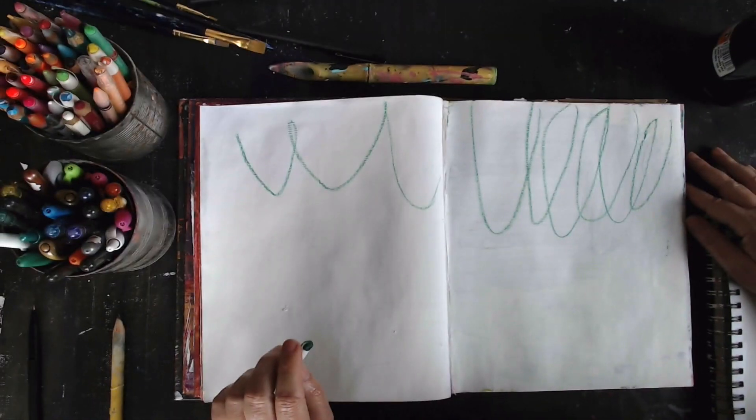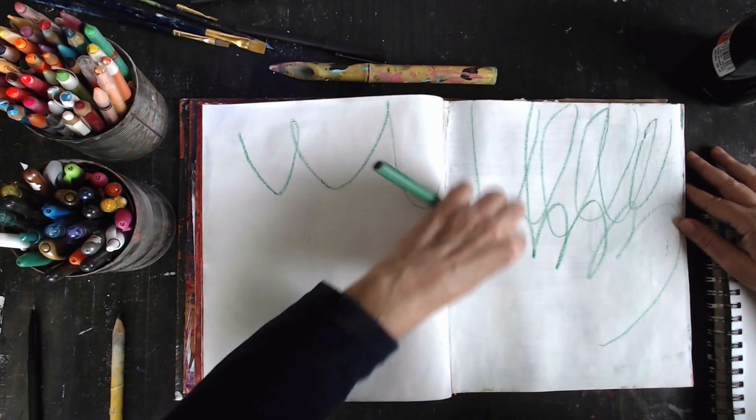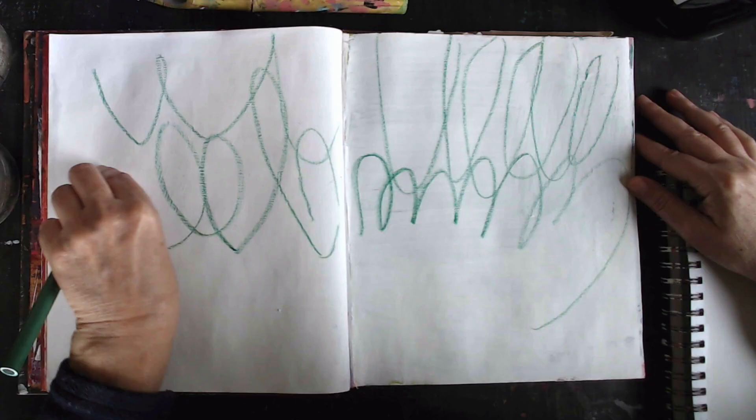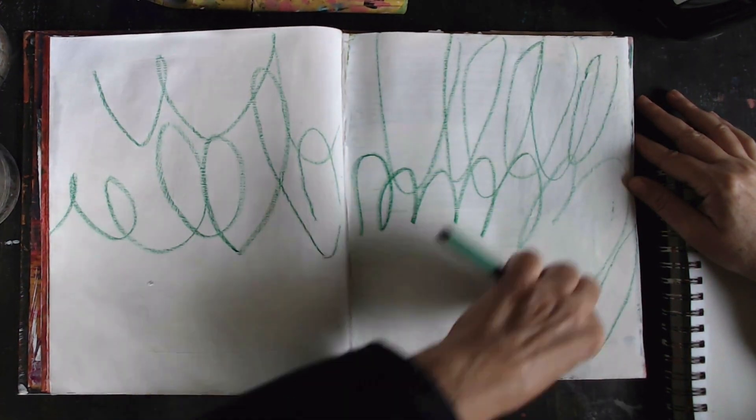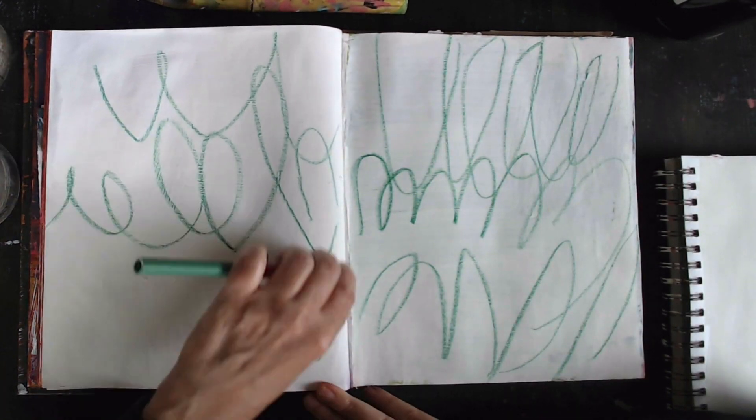You can make shapes, symbols, marks, whatever appeals to you but start with whatever color appeals to you or whatever color you're grabbing first or just any old thing. I love to go off the page. And so right away you've obliterated the blank page.